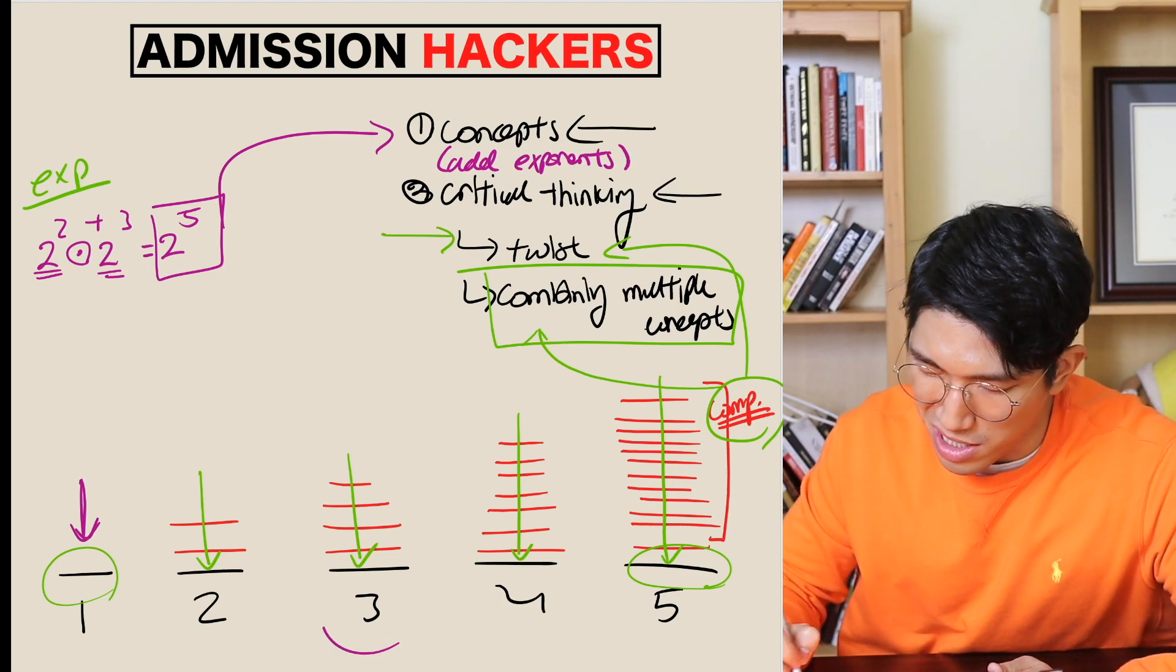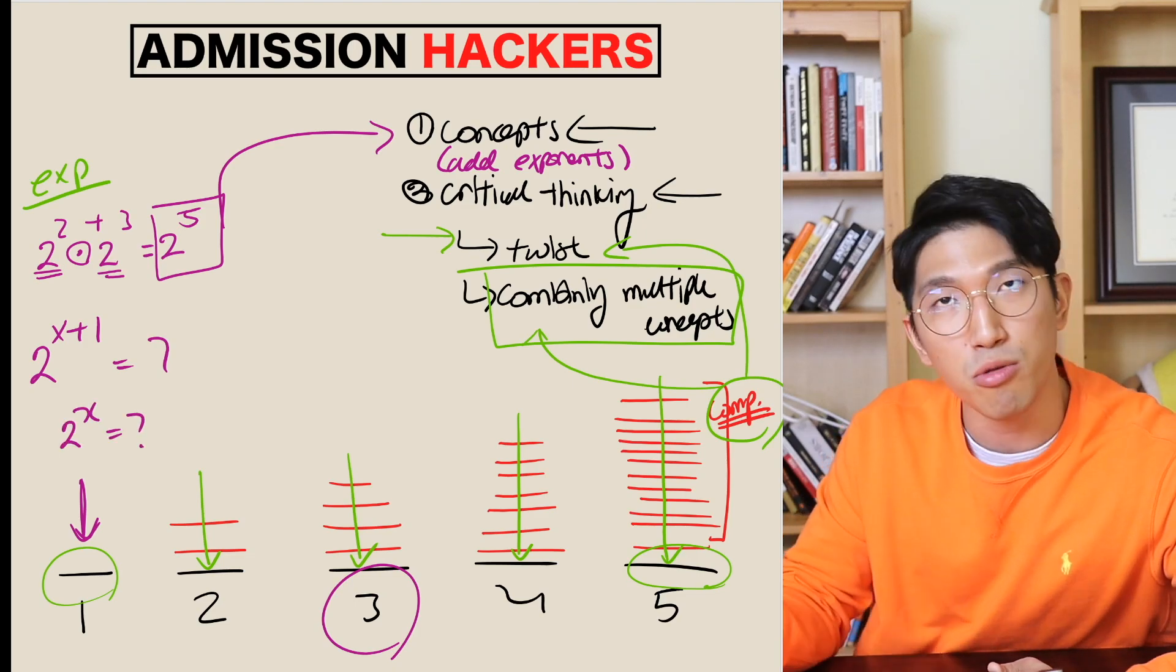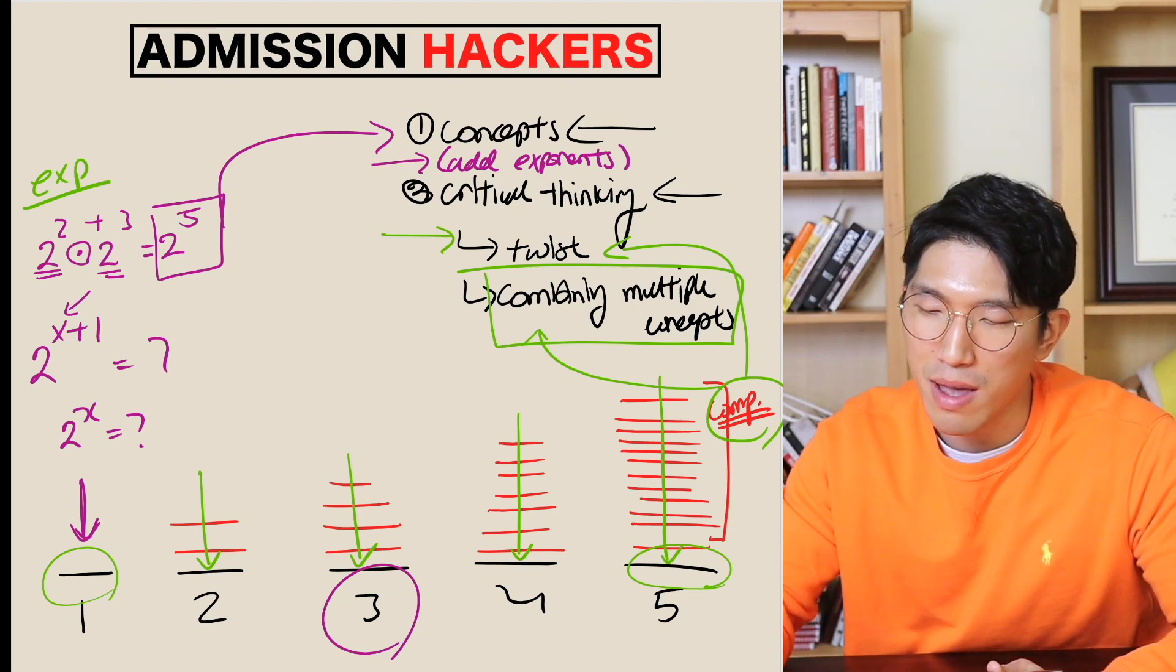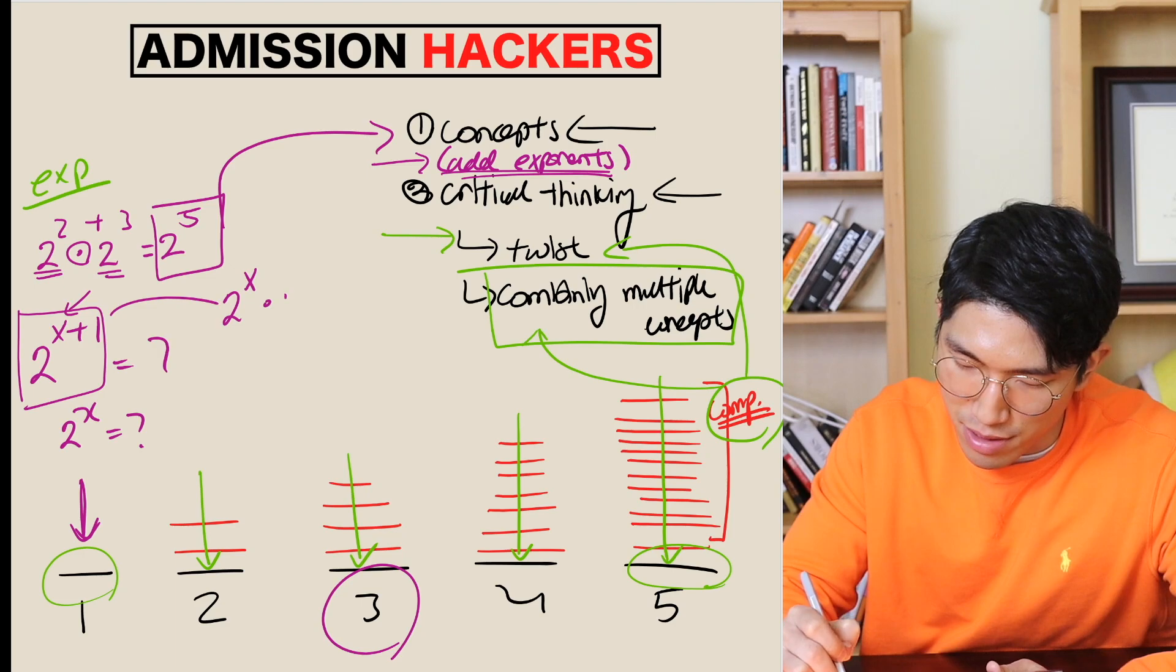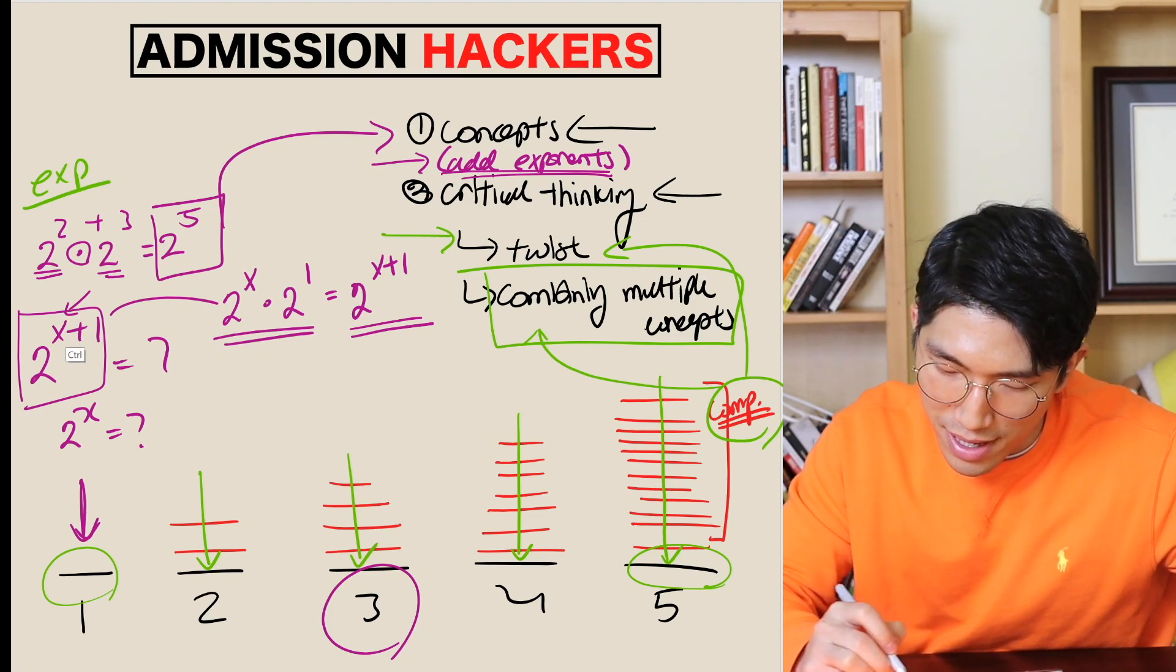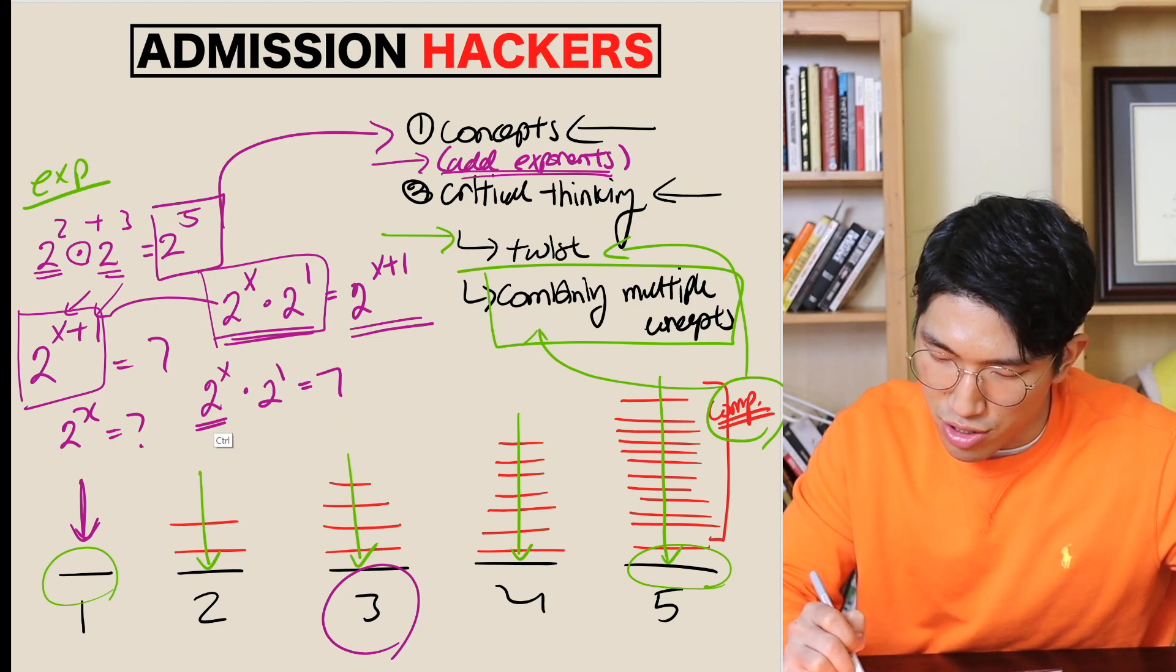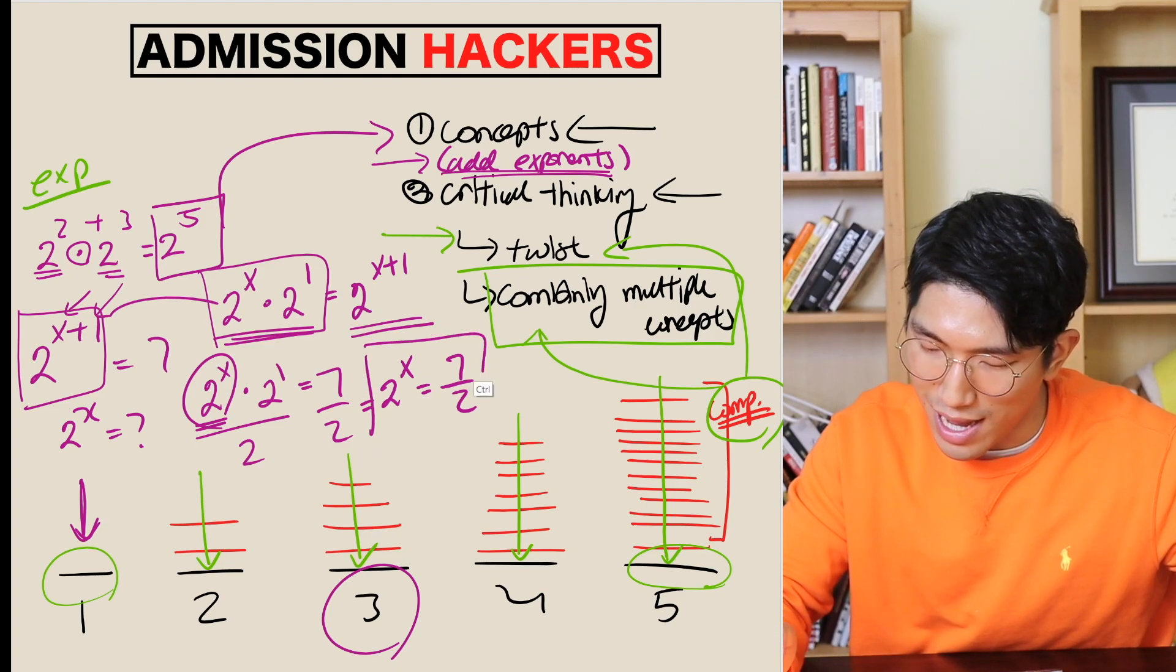Now, let me give you an example of a difficulty three question. The question tells us that 2 to the x plus one is equal to seven, and it's asking us to find out what 2 to the x is equal to. Now, a big chunk of students are going to be stuck on this question. They're not gonna know exactly what to do. They might try to add some stuff in there, like plug in a number for x. I don't know. But this question is also based on the same concept, which is adding exponents. If you think about it, 2 to the x plus one is exactly the same thing as 2 to the x times 2 to the one. That's what gives you 2 to the x plus one, right? So this side and this side, they are the exact same thing, which means we can replace this thing right here with 2 to the x plus one. Which means 2 to the x times 2 to the one is going to be equal to seven. And how do we find 2 to the x? We just isolate 2 to the x by dividing two divided by two. That gives you 2 to the x is equal to seven over two, and that's going to be your answer, right?